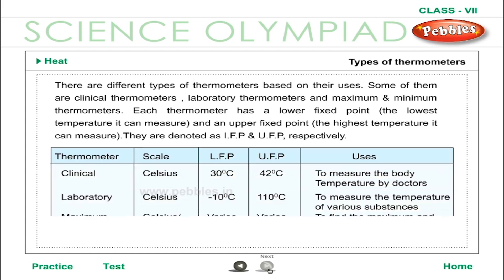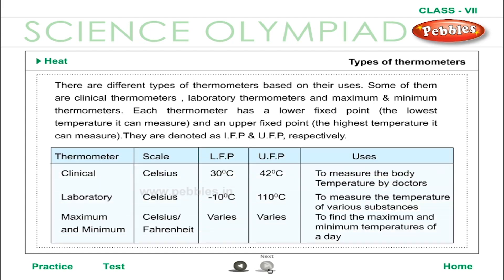Types of thermometers: there are different types of thermometers based on their uses — clinical thermometers, laboratory thermometers, and maximum and minimum thermometers. Each thermometer has a lower fixed point (LFP), the lowest temperature it can measure, and an upper fixed point (UFP), the highest temperature it can measure.